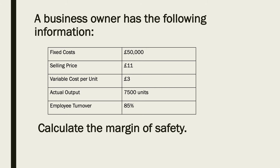A business owner has the following information: fixed costs £50,000, selling price £11, variable cost per unit £3, actual output 7,500 units, and employee turnover 85%. You need to calculate the margin of safety.